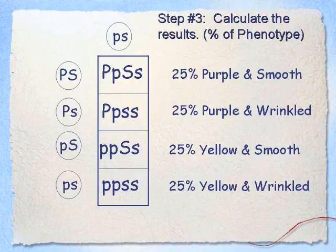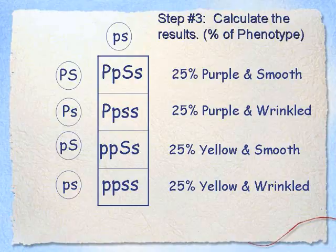Now we're going to look at our results. For a quarter of my genotypes we have big P, little p, big S, little s. We'll look at the phenotype this genotype produces. Remember, purple is dominant, so anytime I have a big P I'm going to have purple corn. Also, smooth is dominant, so every time I have a big S I'm going to have smooth corn. So a quarter of my phenotypes are purple and smooth.